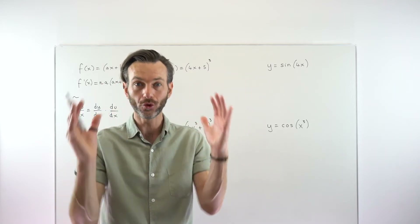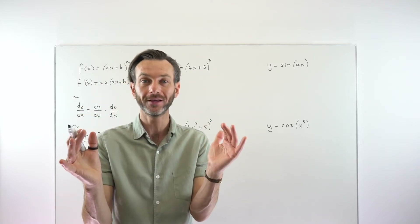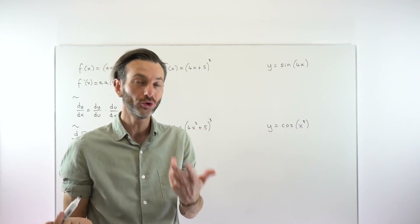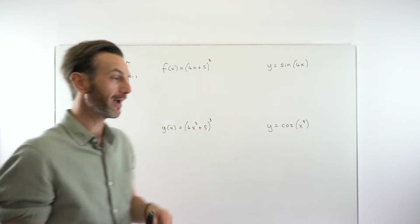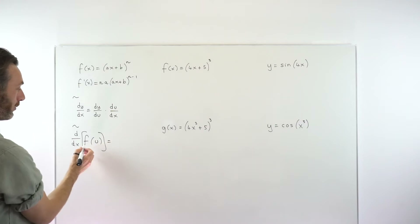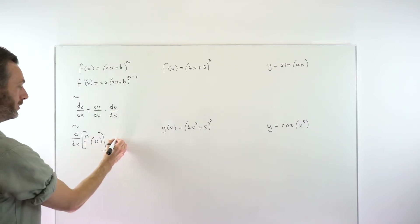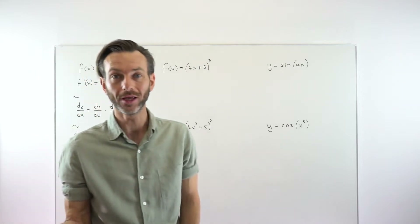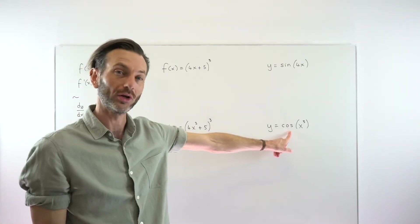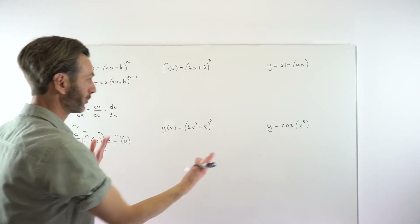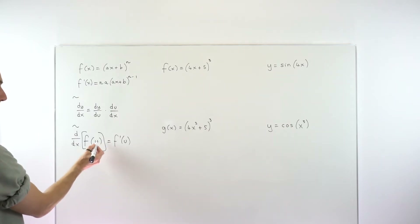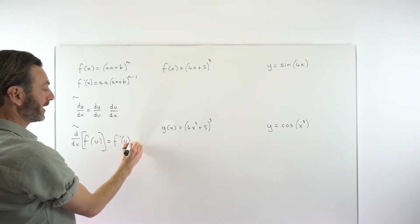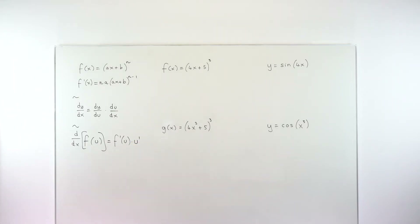It's just two derivatives multiplied together. The derivative of the overall function is f'(u), and how you find that will depend on the type of function — trigonometric or something else. We then multiply that by the internal function's derivative, u dash. Essentially, you're just differentiating the inside function and the outside function and multiplying them together.